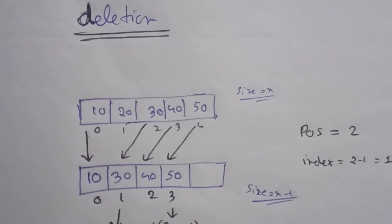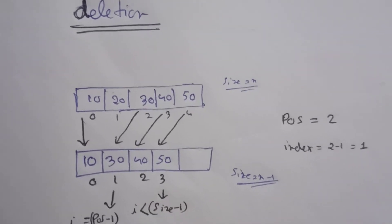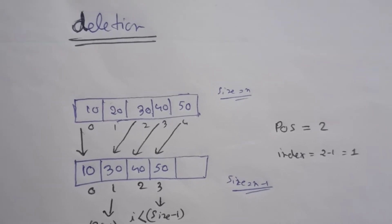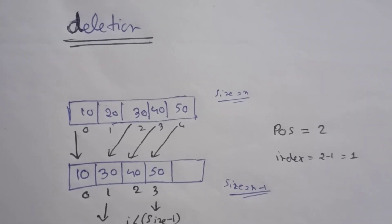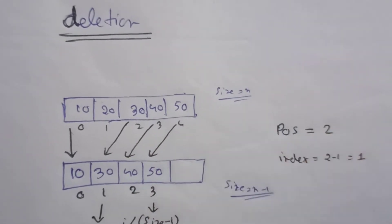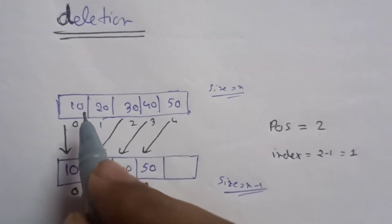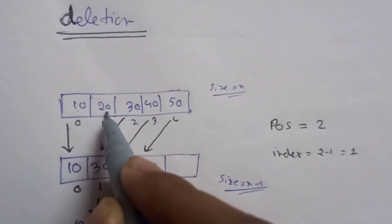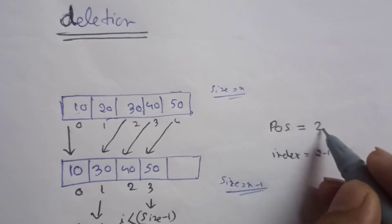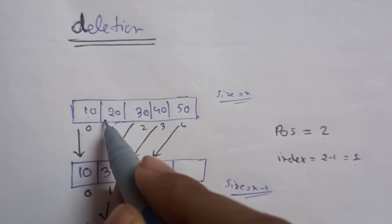Today we are going to take a position as input from the user. If this position is inside our array limits, then we are going to delete the element at that position. Suppose this is our array with five elements: 10, 20, 30, 40, and 50. If the user gives position equals 2, then we delete the element at position 2. Position 2 means index 1, since index is always position minus 1, so we delete element 20.